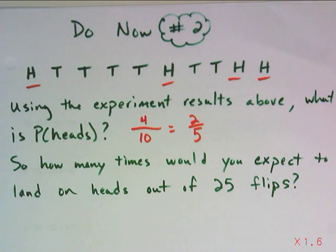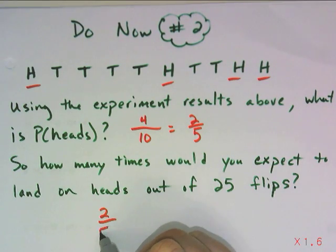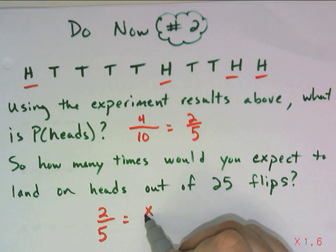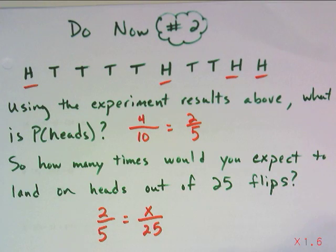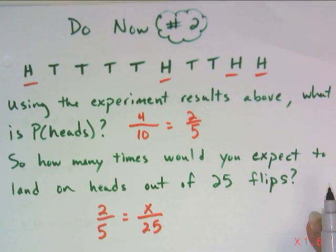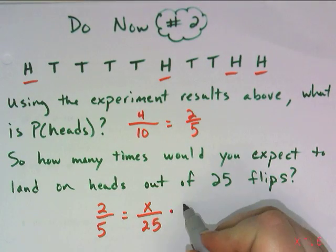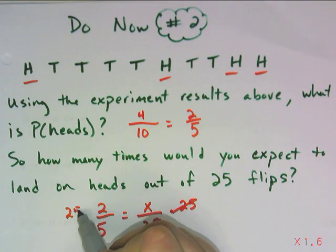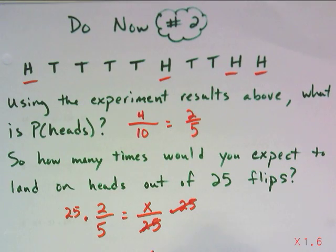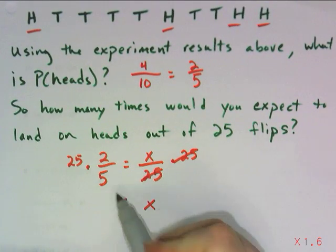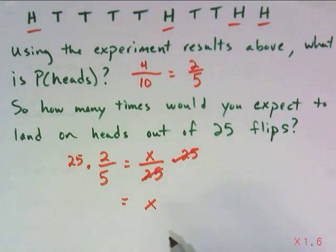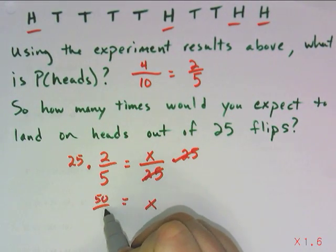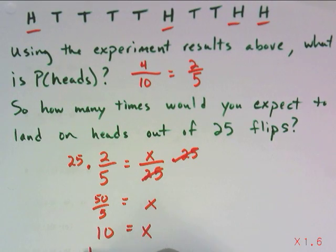So how many times would I expect to land on heads out of 25 flips? Well, now I have to set up a proportion. If I expect to land on heads 2 out of every 5 times, how many times out of 25 times would I expect that to happen? You can solve it a few different ways. Since I already used the scale factor earlier, I'm going to remind you that the other way to solve it would be to multiply by 25 on both sides, so that this number will cancel and we're left with x. Over here, 25 times 2 is 50 over 5, which is 10 times.